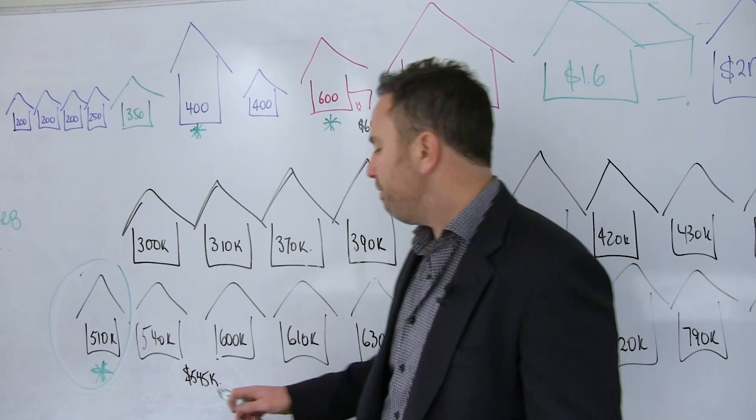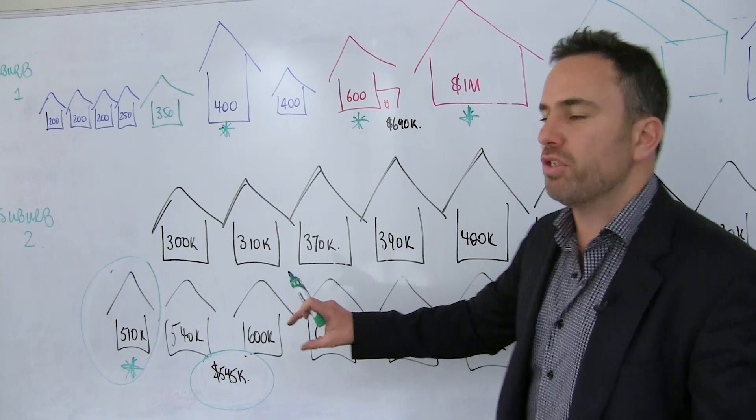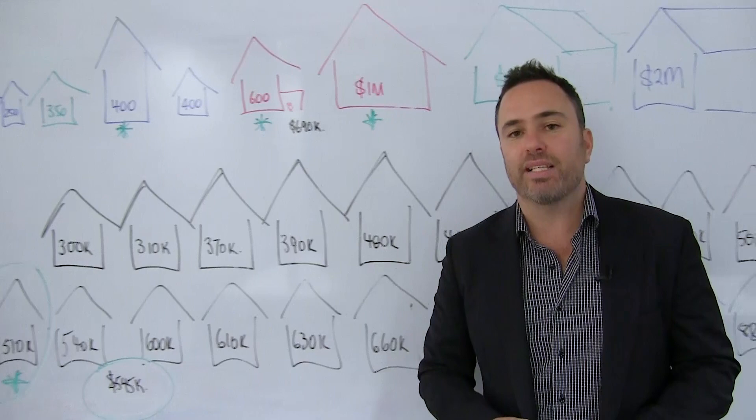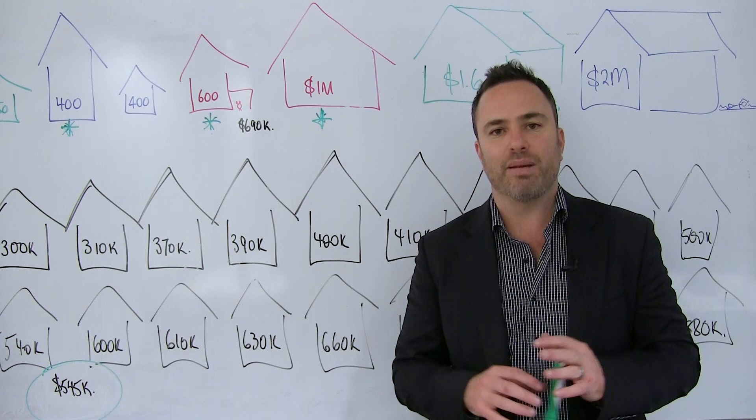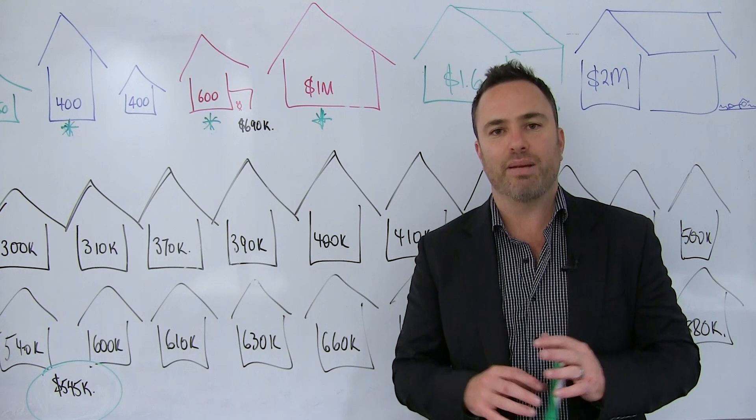If I was to do the same thing and work out the average, you'd get $545,000. So you can see the gap there between the median and the average is a lot smaller than what the gap is between these two. So I hope that explains in colorful terms and pretty pictures the difference between median and average and the fact that you've got to be careful when looking at any type of data, especially median prices, because unless it's over a longer period of time, you can still get discrepancies that may be misleading.